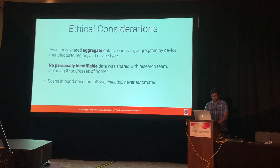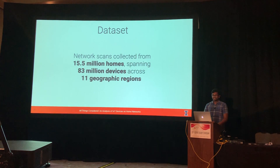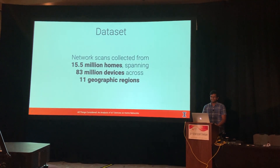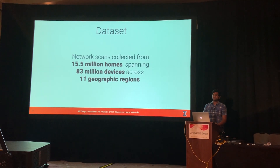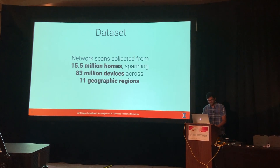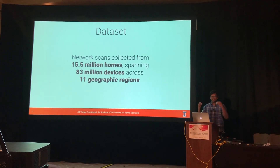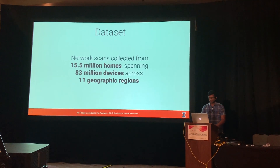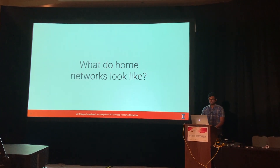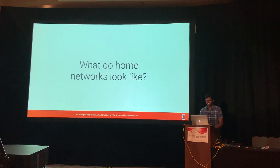This brings us to our final dataset. In total, our dataset consists of internal network scans collected from 15.5 million homes across 83 million devices and 11 geographic regions. This now lets us answer the first question: what do home networks actually look like?